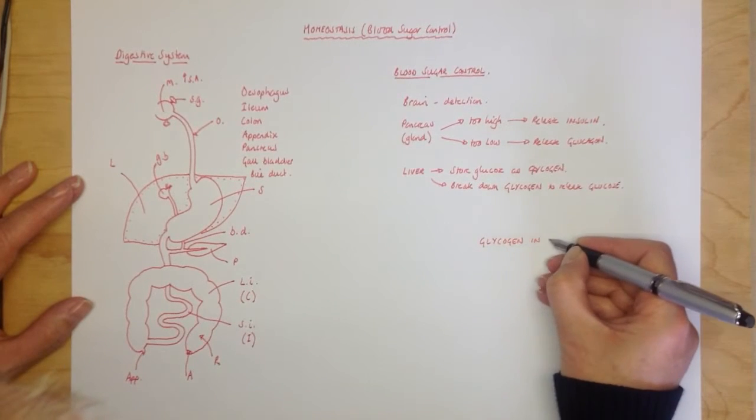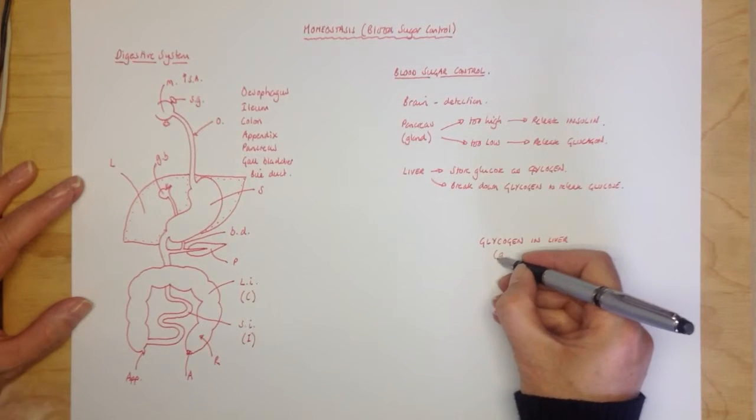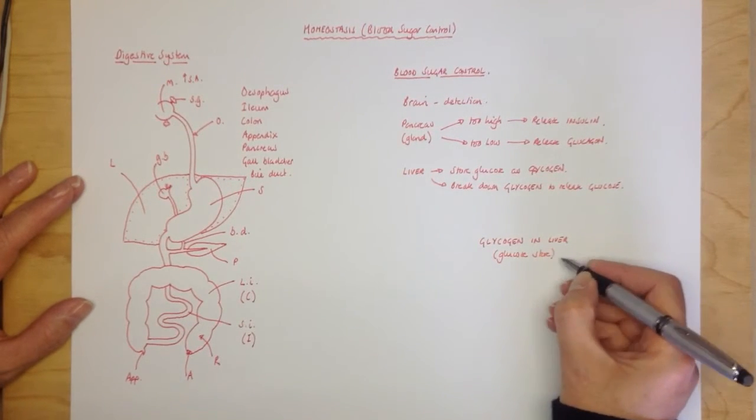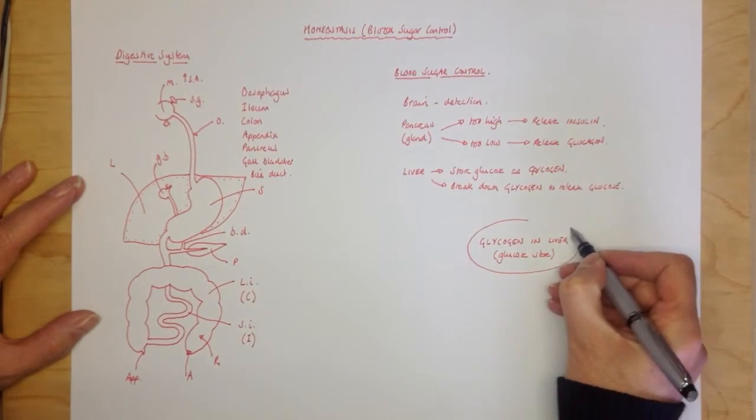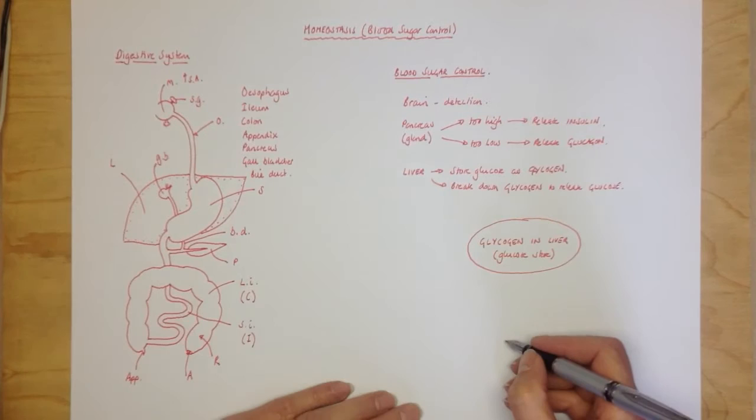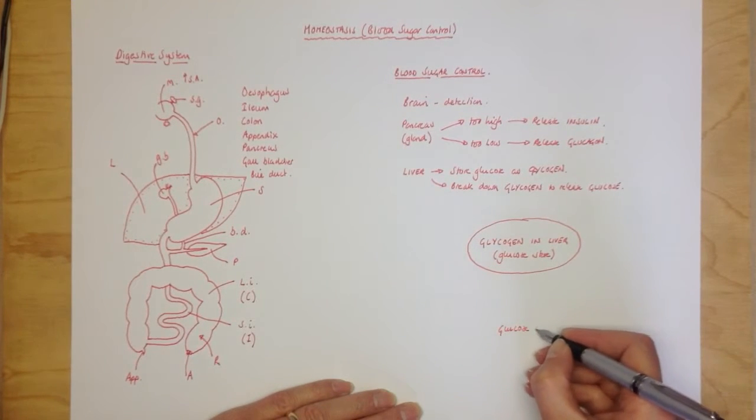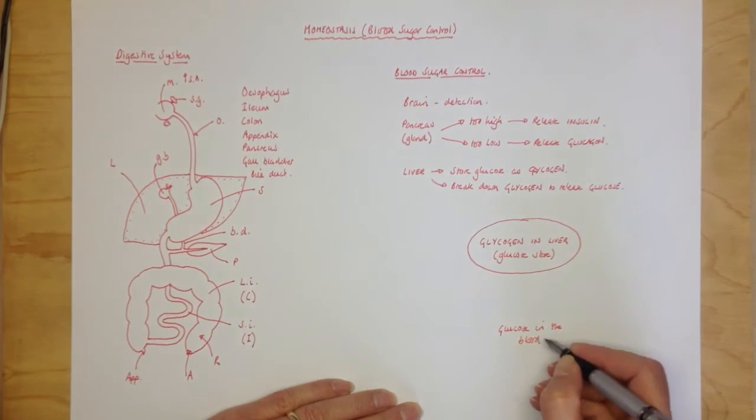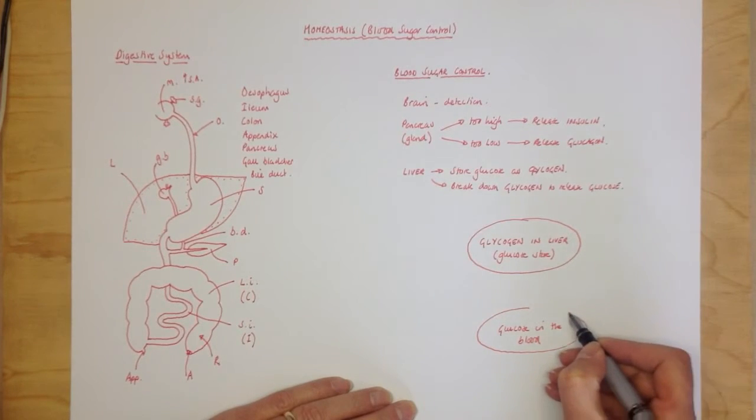Glycogen in the liver. Glycogen in the liver - that's your glucose store. And then if you think of glucose in the blood. Glycogen in the liver, because that's where you're going to use it from.